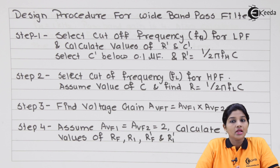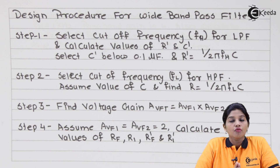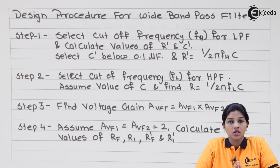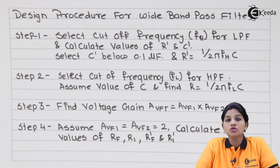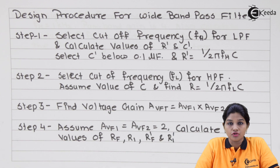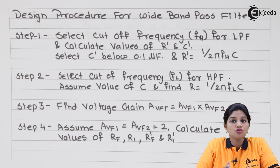Now let's understand the designing process of a wide band pass filter. In case of a wide band pass filter, the circuit consists of a first order high pass filter cascaded — that means connected in series — with a first order low pass filter. While designing, we need to design both the high pass filter and the low pass filter, which are each of first order.